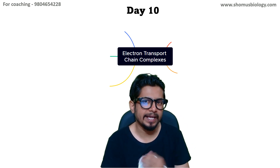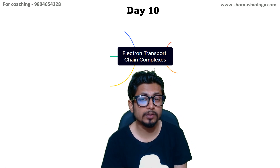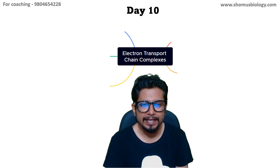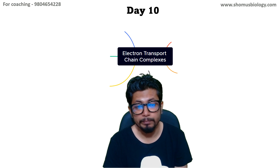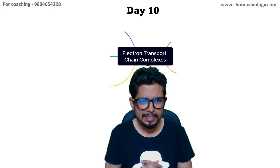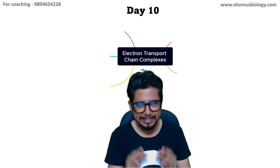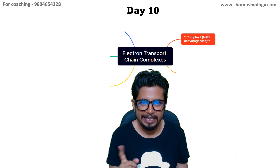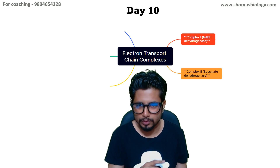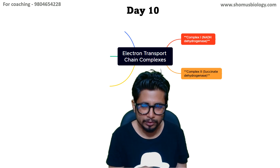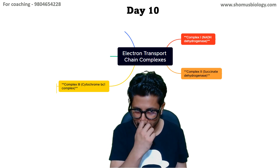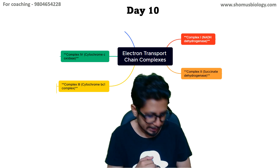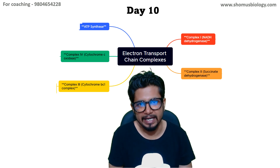Hello everyone, this is Day 10 and I have one of the most important topics to discuss in today's mind map. We are going to talk about the electron transport chain complexes — four important complexes and one enzyme. Complex I is NADH dehydrogenase, Complex II is succinate dehydrogenase, Complex III is cytochrome bc1, Complex IV is cytochrome c oxidase, and finally the enzyme ATP synthase.